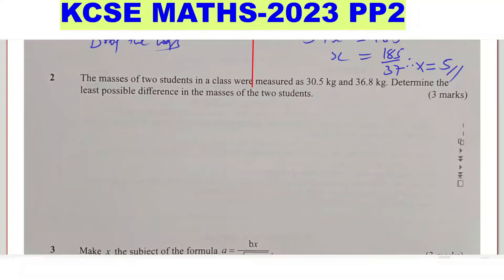Question 2. The masses of two students in a class were measured as 30.5 kg and 36.8 kg. Determine the least possible difference in the masses of the two students.